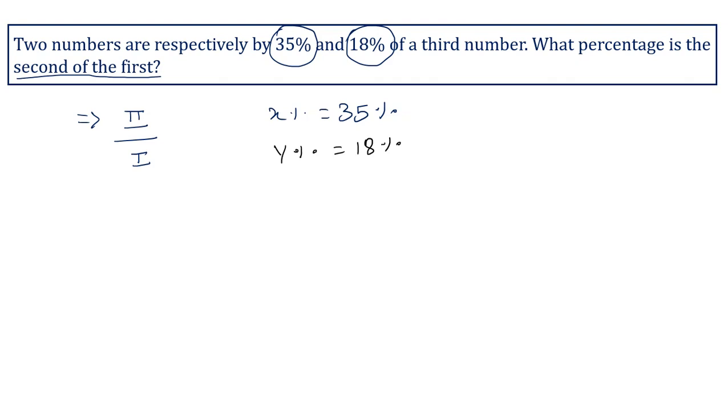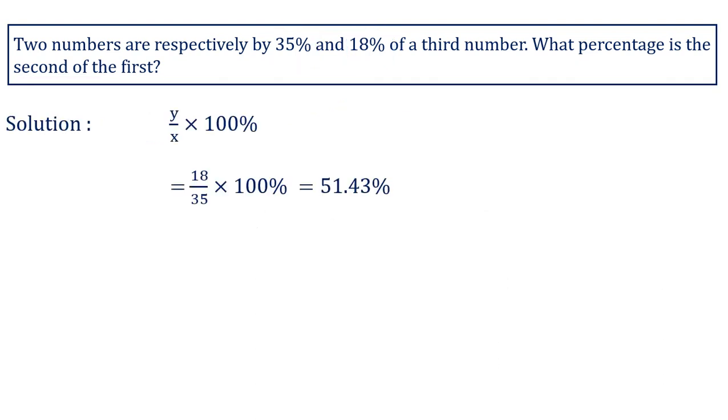I will be using the formula that is y upon x into 100%, which is equal to 18 upon 35 into 100%. Now solve this: 5 into 20 is 100, so we get 18 into 20 which is 360 upon 7%, which equals 51.43%. So 51.43% is the second of the first.